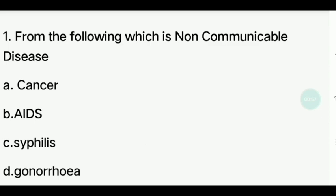From the following, which is a non-communicable disease? Non-communicable disease (NCD) is a disease that does not spread. Options: Cancer, AIDS, Syphilis, Gonorrhea. The answer is Cancer.